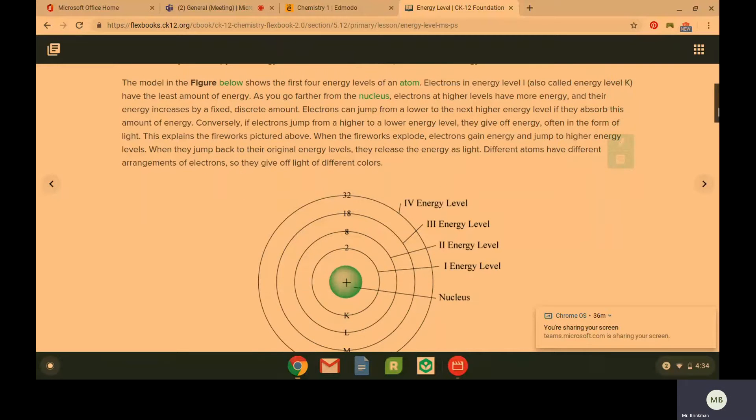This diagram is going to show the first four energy levels. So in energy level one, electrons are going to have the least amount of energy. And then as you move out from the nucleus, as you move farther and farther out, the electrons are going to have higher and higher energy.